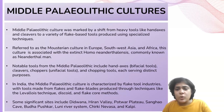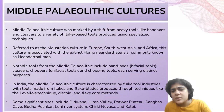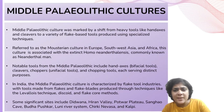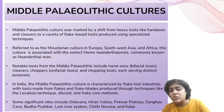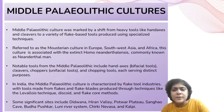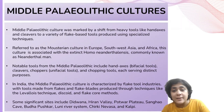The transition from the Lower Paleolithic to the Middle Paleolithic marks a shift from heavy tools like hand axes and cleavers to a more diverse toolkit primarily consisting of flakes, commonly referred to as the flake tool industry. In Europe, southwest Asia, and Africa, this Middle Paleolithic culture is known as the Mousterian culture, named after the Moustier rock shelter in France. The hominin associated with the Mousterian culture is the extinct Homo neanderthalensis, commonly known as Neanderthal man, who lived during the upper Pleistocene.